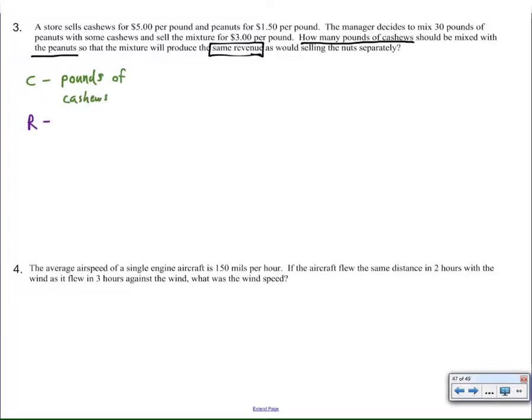Now in this case, the question that was being asked was how many cashews should they add to the mixture, but it's really kind of difficult in this case to see what the other variable is supposed to be. But what they said was, we want the revenue to be the same as if we sold the stuff separately. The other thing that's going to change, besides the pounds of cashews added to the mixture, will be the revenue that's created from that mixture or from selling separately. So revenue represents the other unknown that's changeable in this context.